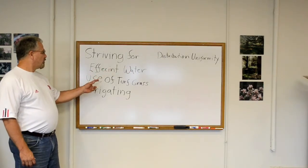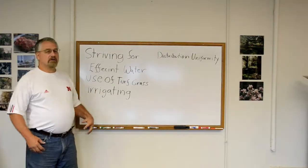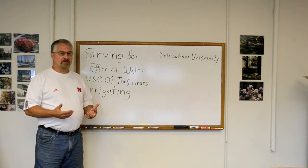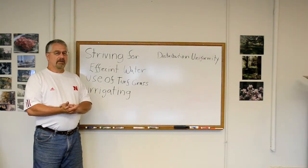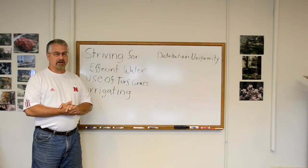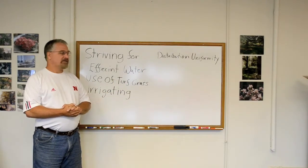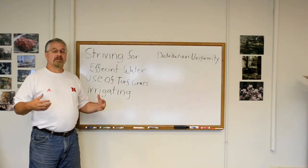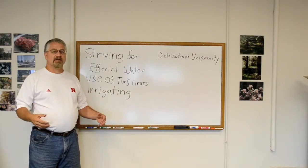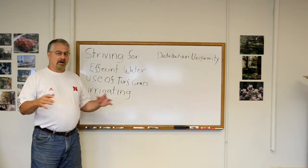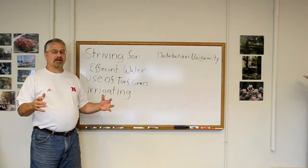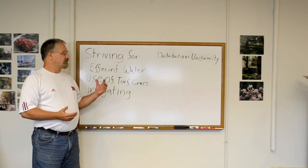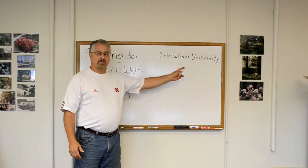Striving for efficient water use of turf grass irrigating. One of the things in striving for efficient water use takes on a number of elements that play into efficient watering. Distribution uniformity is what we're going to look at today. With that would be your scheduling of your sprinkler systems, knowing the type of soils that your plant material is in, the type of plant material and its water requirements, and of course your seasons. All this in your installation, the type of sprinkler heads you use, all this is under the umbrella of water efficiency. But today we're going to talk about distribution uniformity.